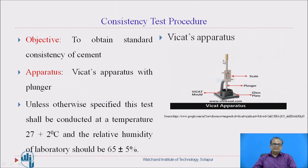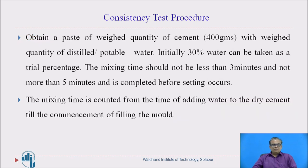The objective of the consistency test is to obtain the standard consistency of cement. The apparatus used is Vicat's apparatus with a plunger, as shown here. This test should be carried out at a temperature of 27 ± 2°C and the relative humidity of the laboratory should be 65 ± 5%. Firstly, 400 grams of cement is weighed accurately on a weighing balance. Potable or distilled water is taken, and initially 30 percent water can be taken as a trial percentage, as this is a trial and error procedure.